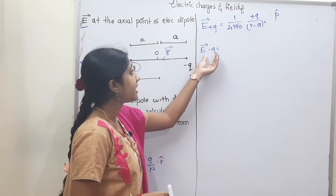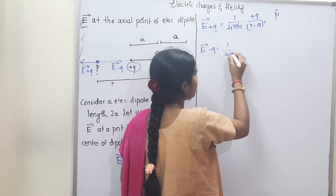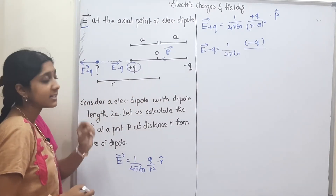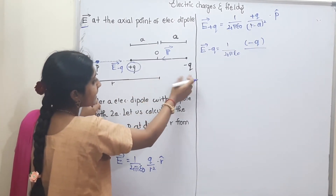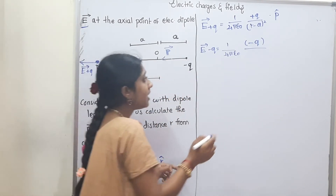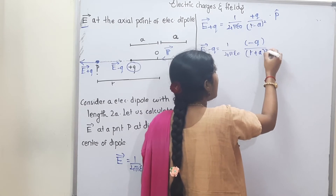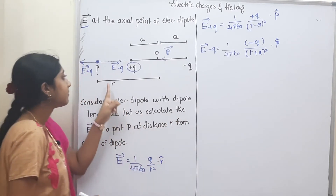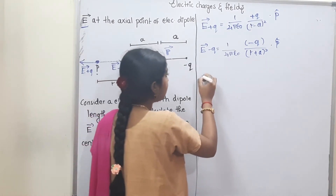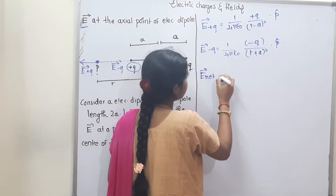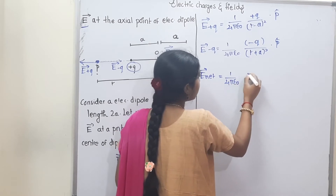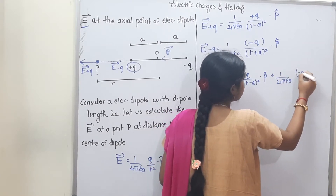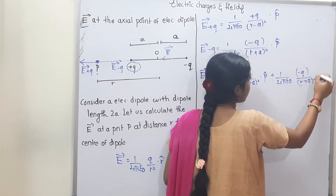Next, for the negative charge, the electric field is E₋q = 1/(4πε₀) × (−q)/(r+a)², in the direction of p̂. The distance from minus q to point P is r plus a, so the denominator is (r+a)². The dipole moment direction p̂ is represented here as well.